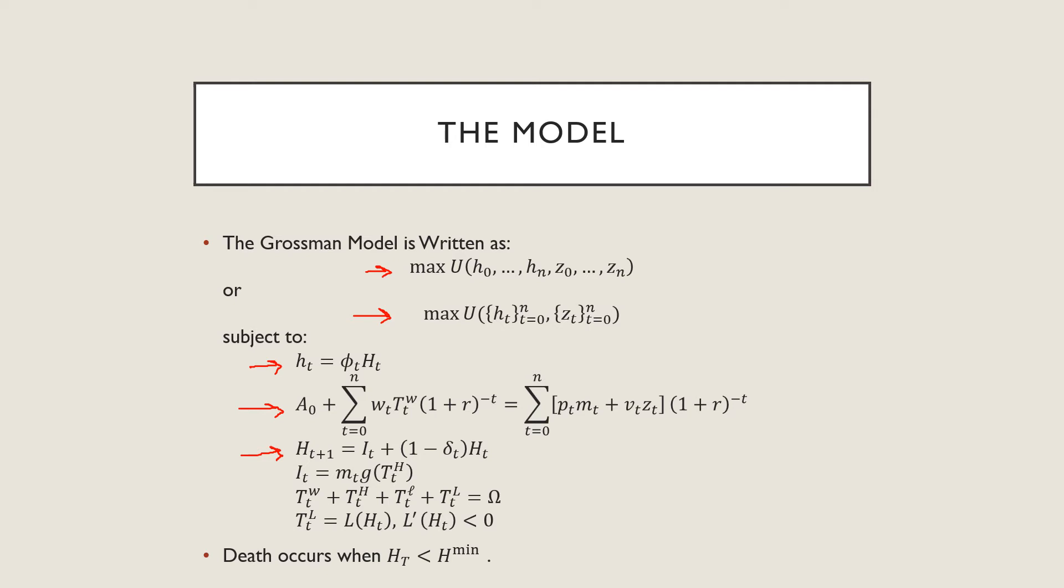We have our law of motion of health capital here, which is just a law of motion of capital but this time we're thinking about it in terms of health. And this next one is going to be interesting because we have to actually produce health investment, where we take our medical expenditure, or our expenditure on health-related goods and services, times this g of t of h type of function, which is your time that you have to invest in being healthy. So you actually produce this.